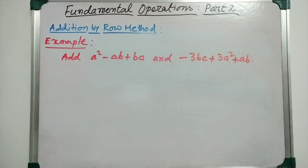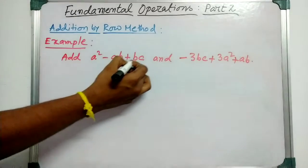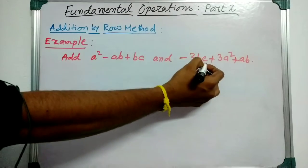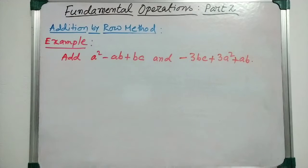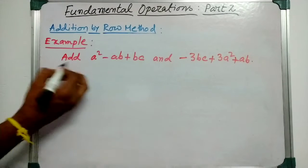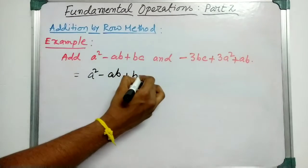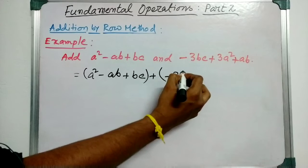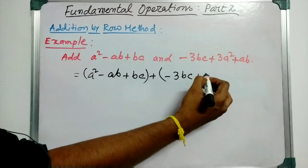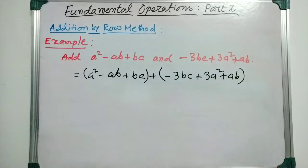Let us go for an example. The question says: add s² minus ab plus bc, and minus 3bc plus 3s² plus ab. For the first step, we will write them in a row: s² minus ab plus bc plus minus 3bc plus 3s² plus ab.